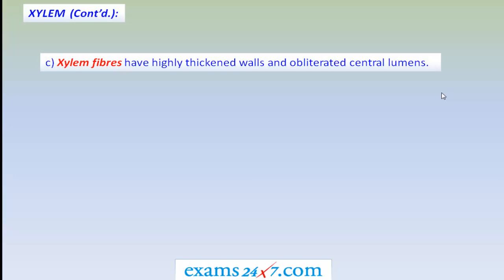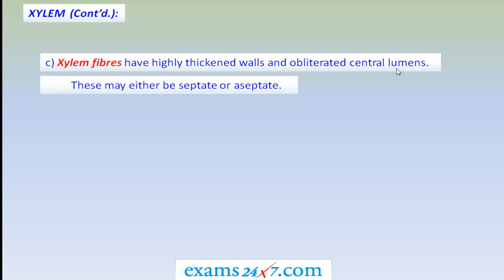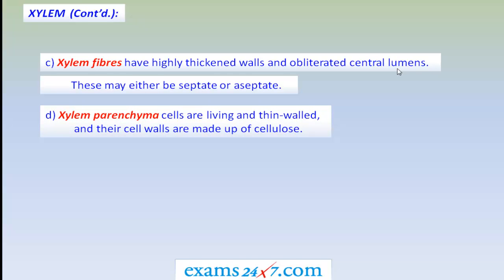Xylem fibers are the third non-living component of the xylem. They have highly thickened walls and obliterated central lumens, and may be either septate or aseptate. They give strength and support to the xylem tissue.